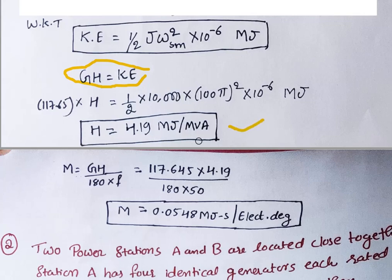Once you get H, it is easy to find M. M equals G·H divided by 180F. So G is 117.65 and H is 4.19, and 180 × 50. You will get M equals 0.0548 megajoules per second per electrical degree.